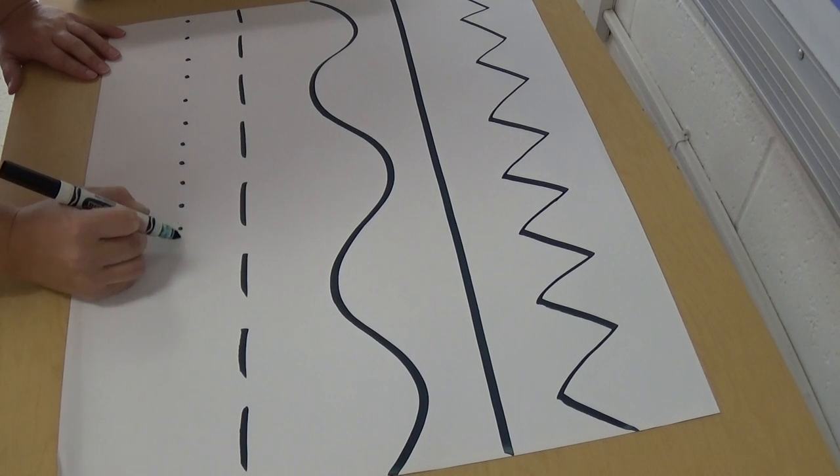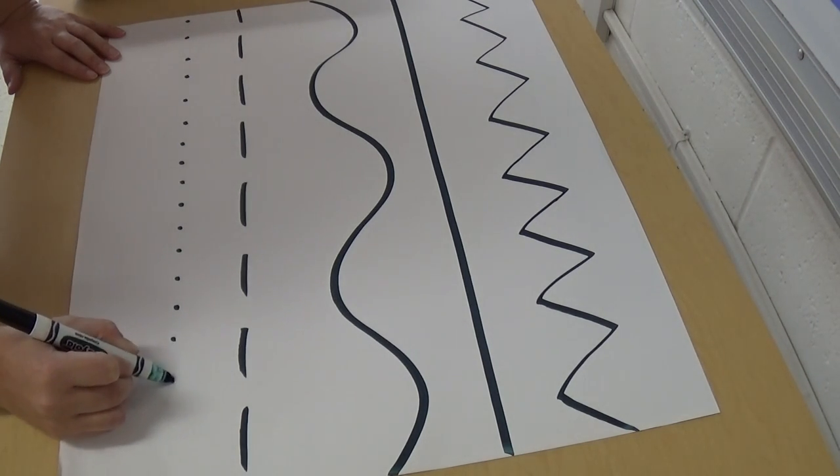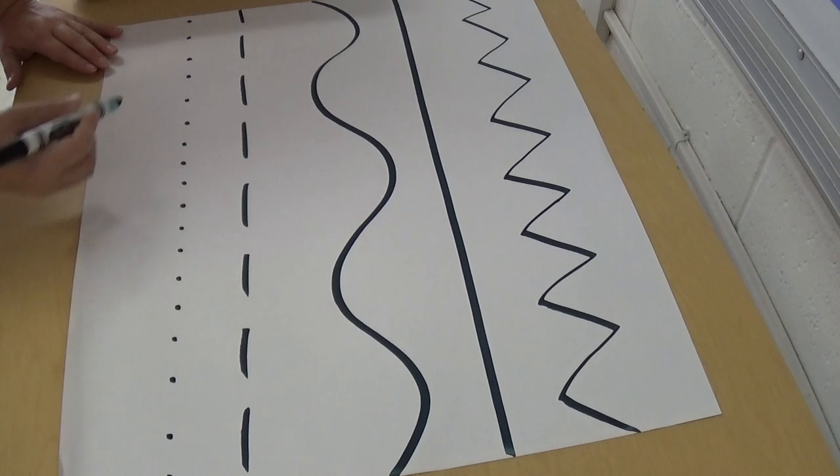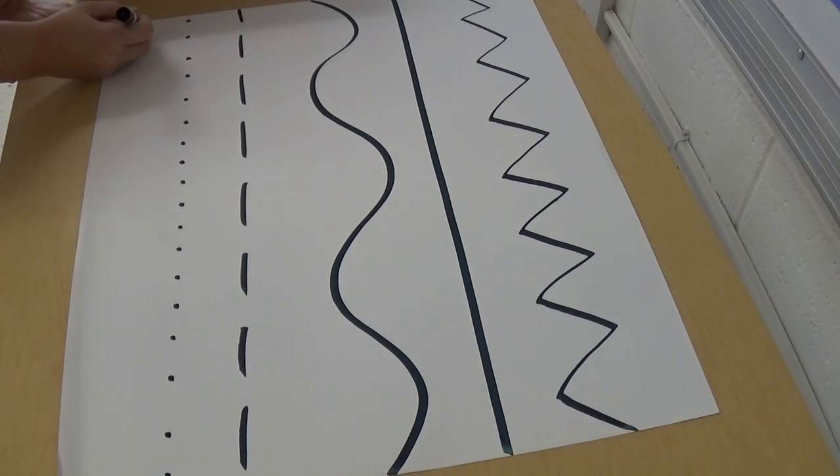This line is made all out of dots. You can choose what you want your lines to look like, but they should go from one side all the way to the other.